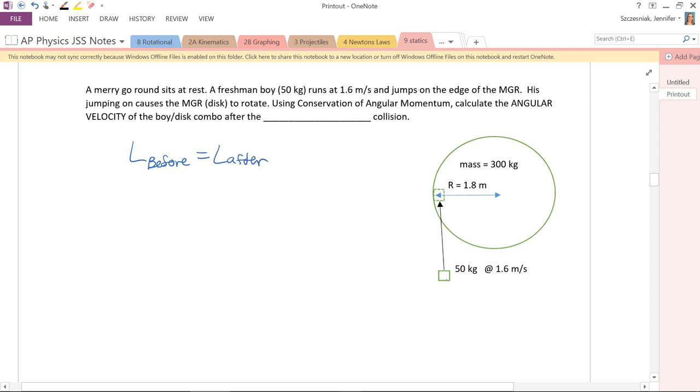So the momentum of the boy, he is running, but relative to the center or the pivot, he has his own momentum, M, V, R, is equal to momentum after.